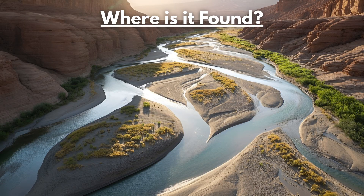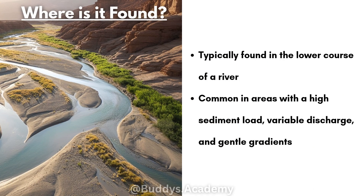So where are braided streams found? They are typically going to be found in the lower course of a river and they are going to be common in areas with a high sediment load, because that's basically why a braided stream will form — because of the high sediment load, the amount of sand or pebbles in that actual river.